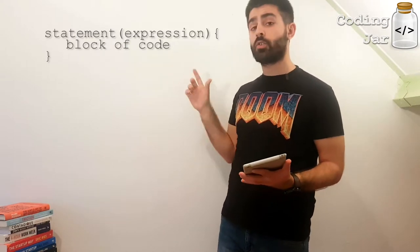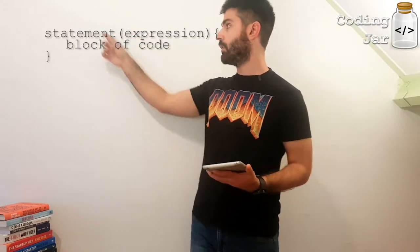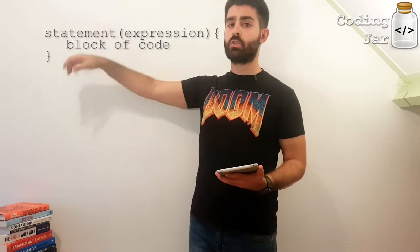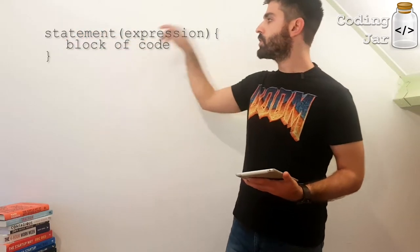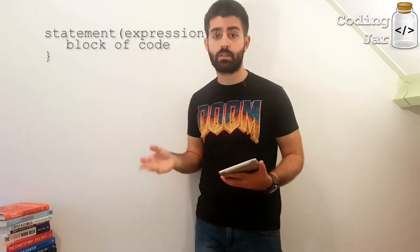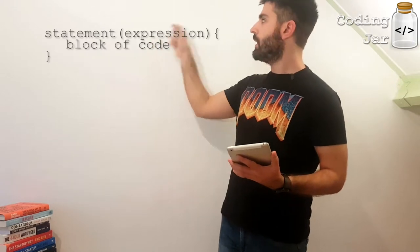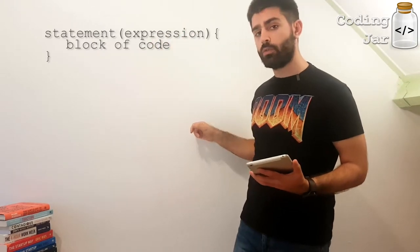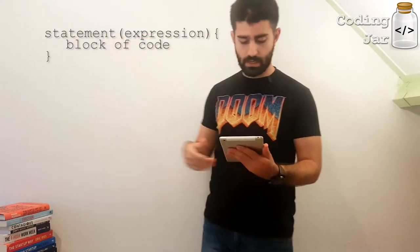General information regarding flow control statements. Usually the flow control statements go as follows. First, we have the statement declaration, so if, while, for, whatever. Then we usually have parentheses, where inside the parentheses a statement which amounts to true or false is expressed. And then we define a block of code which is to be controlled by the expression and the statement.